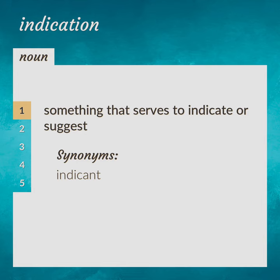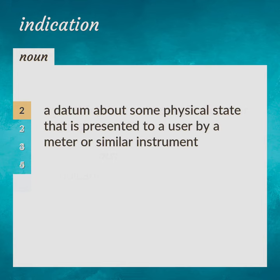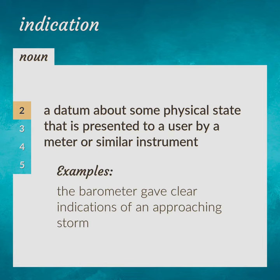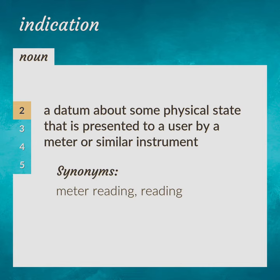Indicant. A datum about some physical state that is presented to a user by a meter or similar instrument. The barometer gave clear indications of an approaching storm. Meter reading. Reading.